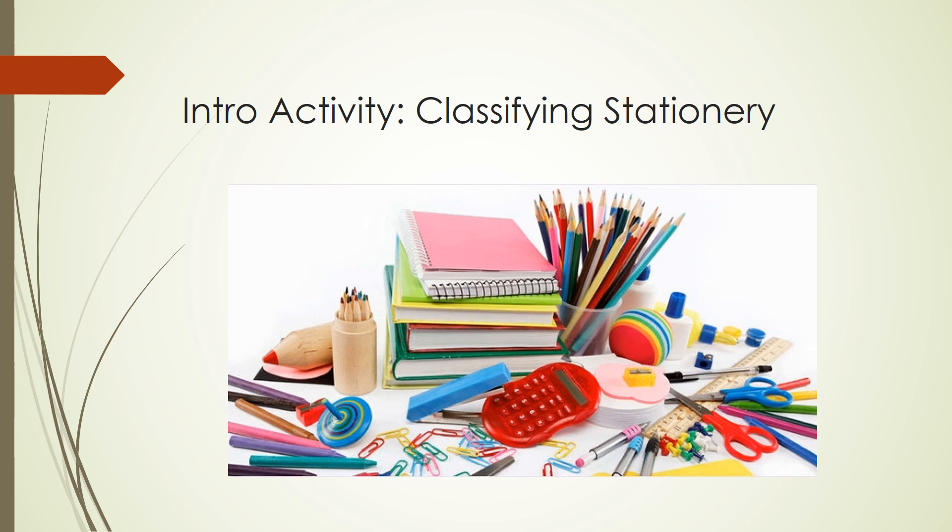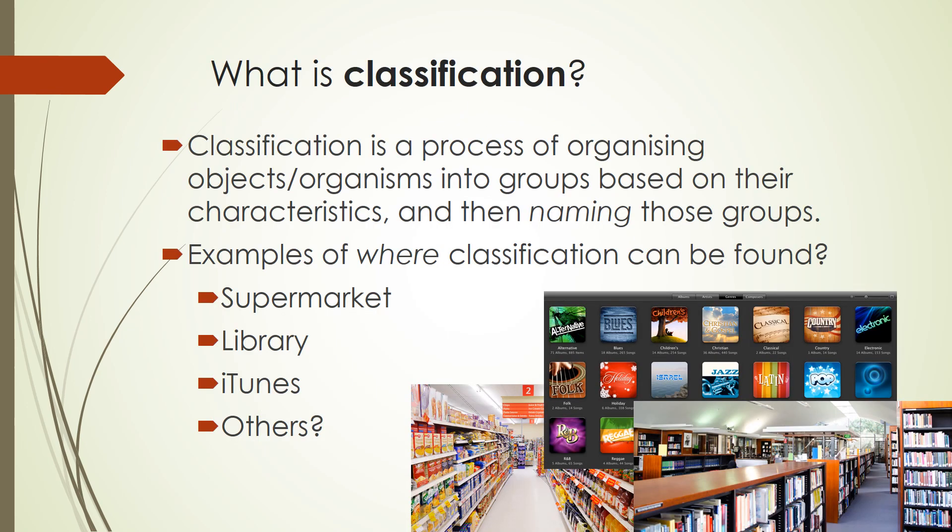So you can see there's a wide range of different ways we can sort things into groups. This leads into classification, because classification is a process of organising objects — or in this case, organisms — into groups based on their characteristics, and then naming those groups. You did that activity with non-living things, but in this topic we're going to focus on how we can group living things into groups based on their characteristics.